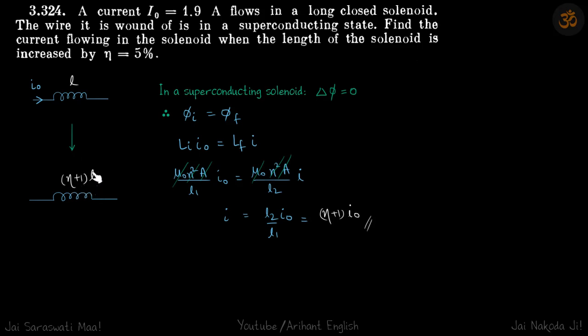We are supposed to find the new current. In a superconducting solenoid, there is no change in flux. If there is a change in flux, then EMF will be induced. If EMF is induced and the resistance is zero, current will become infinity, which is not possible.